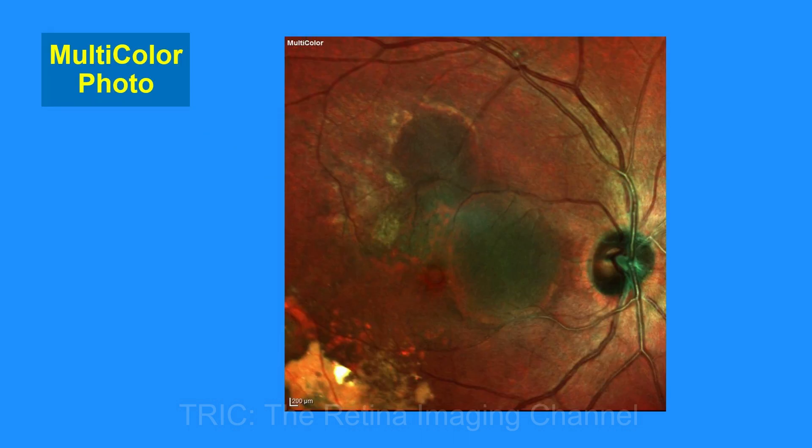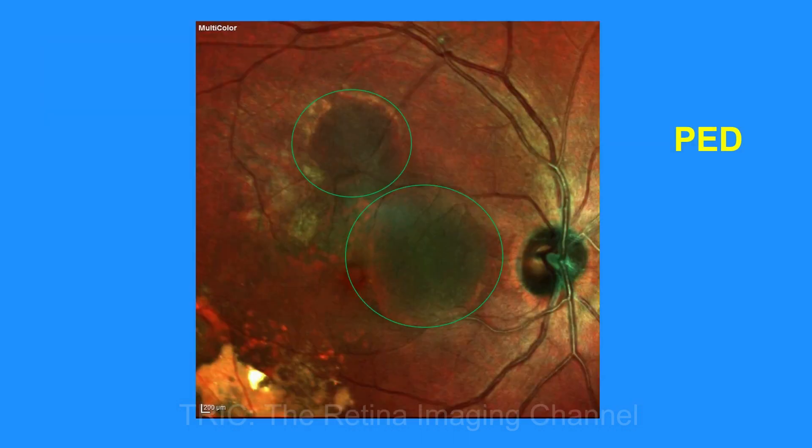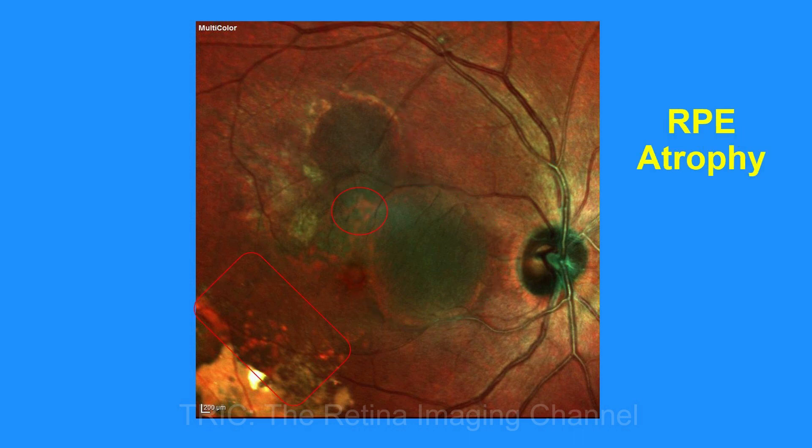This is a multicolor photo of the right eye of a patient. The green circle here shows two dark areas which are PEDs. The red rectangle and the red circle show the areas of RPE atrophy, and the green circle below shows hard exudates.